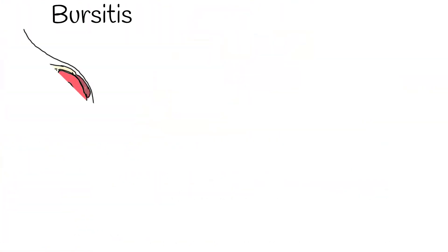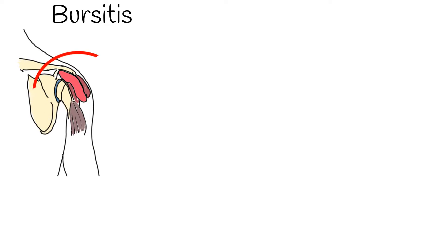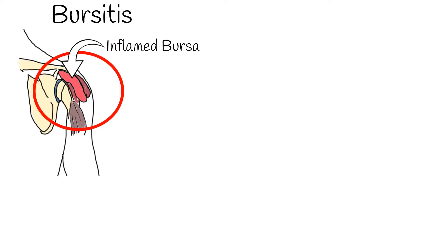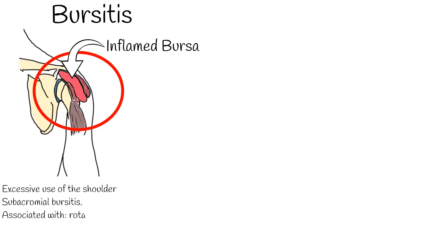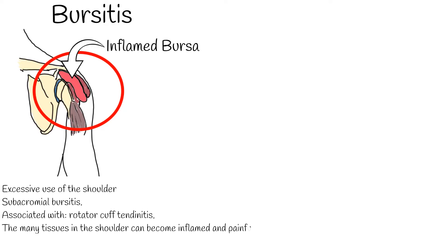Bursitis. Bursae are small, fluid-filled sacs located in joints. They act as cushions between bones and the overlying soft tissues, and help reduce friction between the gliding muscles and the bone. Sometimes, excessive use of the shoulder leads to inflammation and swelling of the bursa between the rotator cuff and part of the shoulder blade known as the acromion. The result is a condition known as subacromial bursitis.